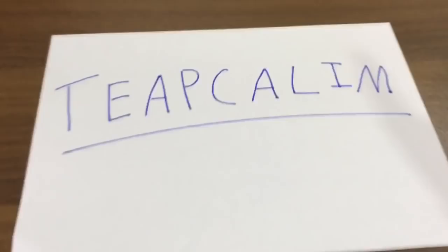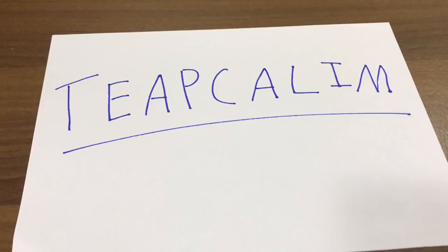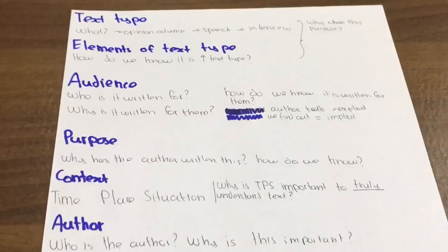So the way you're going to do is you're going to pick out these individual components corresponding to your text. So you're going to identify what is the text type? What are the elements of the text type? What is the purpose? And I'm going to show you how to do that now. The first thing is text type. What is the text type? Is it an opinion column? Is it a speech? Is it an interview? There are many types of text types.